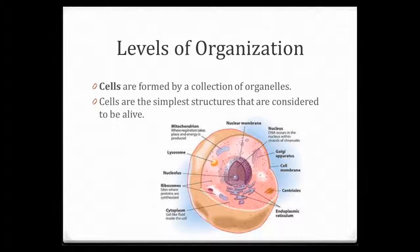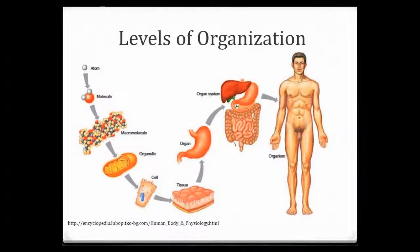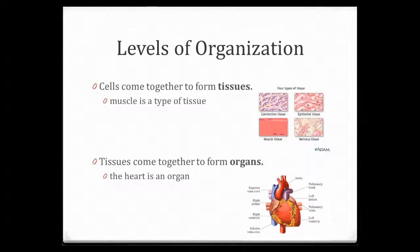Let's step back and review our levels of organization. We start with the atom, the smallest structure we can study. We take atoms and form molecules, put molecules together and form macromolecules, put macromolecules together and form organelles, and those organelles put together form the cell. Now, if we put cells together we form tissues. Some types of tissues we can study include connective tissue, epithelial tissue, muscle tissue, and nervous tissue.